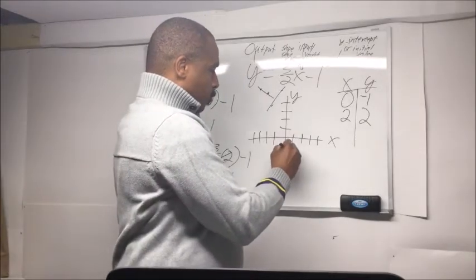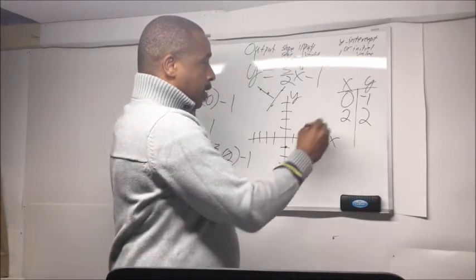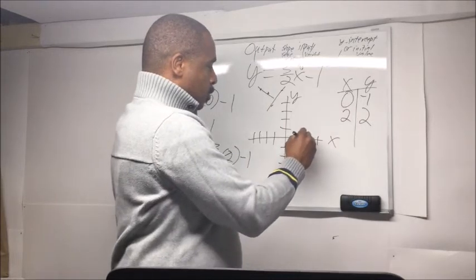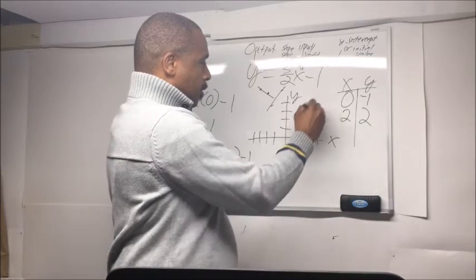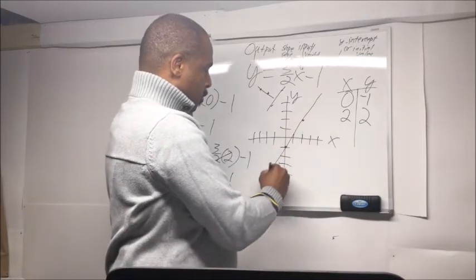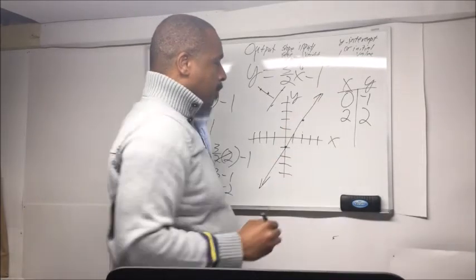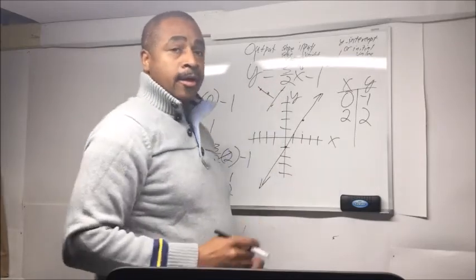So 0 and negative 1 is going to be right here. And then 2 and 2. So 1, 2, and then up 2, 1, 2. It's right there. And so that would be the line of that equation.